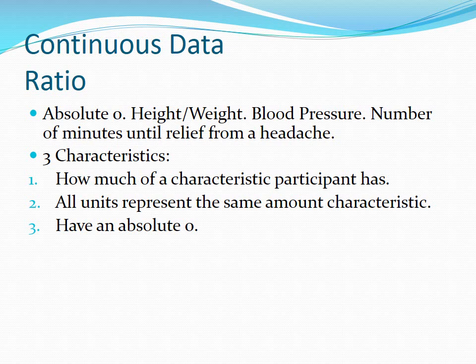The third characteristic of ratio is that there is an absolute zero. For example, on a yardstick, a researcher can determine an absolute zero, which represents no height at all. Other examples would be someone's blood pressure or number of minutes until release from a headache — zero minutes, 10 minutes, 15 minutes. Always remember: ratio has an absolute zero.